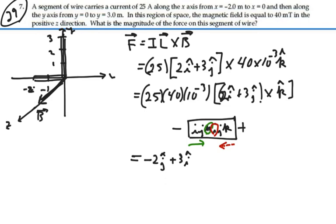Or in order, that would be 3i minus 2j newtons. And that is our force, our vector force, on this segment of wire.